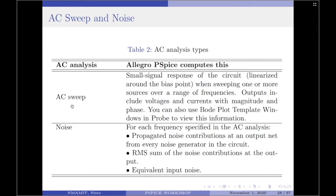You can also use Bode plot template windows in probe to view this information. If the type of the AC analysis is noise, then the Allegro PSPICE computes, for each frequency specified in the AC analysis, propagated noise contributions at an output net from every noise source generated in the circuit, the RMS sum of the noise contributions at the output, and lastly, equivalent input noise.